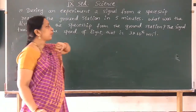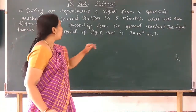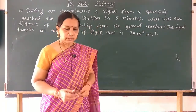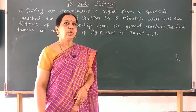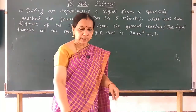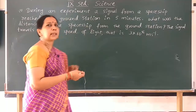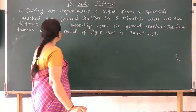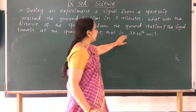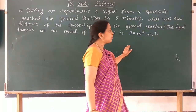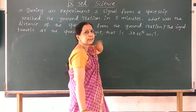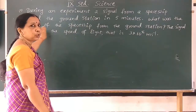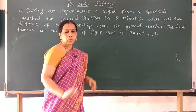During an experiment, a signal from a spaceship reached the ground station in 5 minutes. What was the distance of the spaceship from the ground station? You have to find the distance. You know the formula to find speed: V is equal to distance travelled divided by time taken. The signal travels at the speed of light, which is 3 × 10⁸ meters per second. Time taken is 5 minutes and speed is given as 3 × 10⁸ m/s.